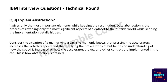The next concept is abstraction. It reveals only the most important elements while keeping the rest hidden. Data abstraction is the process of revealing only the most significant aspects of a data set to the outside world while keeping implementation details hidden. Consider a man driving a car — he only knows that pressing the accelerator increases speed and applying the brakes stops it, but has no understanding of how these mechanisms are implemented internally. This is abstraction.